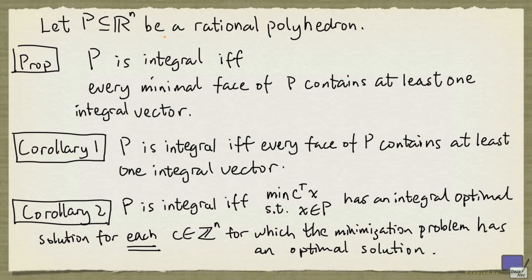Suppose that p is a rational polyhedron in R^n. Then p is integral if and only if every minimal face of p contains at least one integral vector.